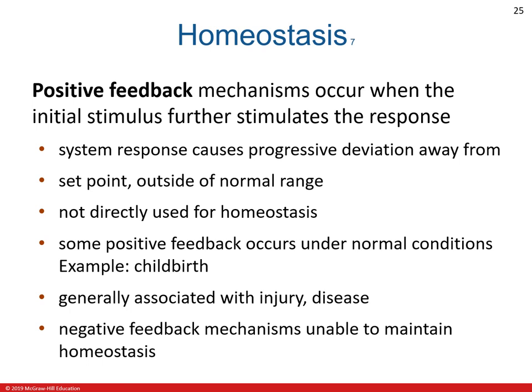In positive feedback, the system of response causes progressive deviation away from the set point and outside the normal range, and it is not directly used for homeostasis. For example, during childbirth or any other injuries and diseases, blood may continuously flow and the body cannot identify any problem with that — so it continuously flows until the patient bleeds out and loses blood, which may lead to death.